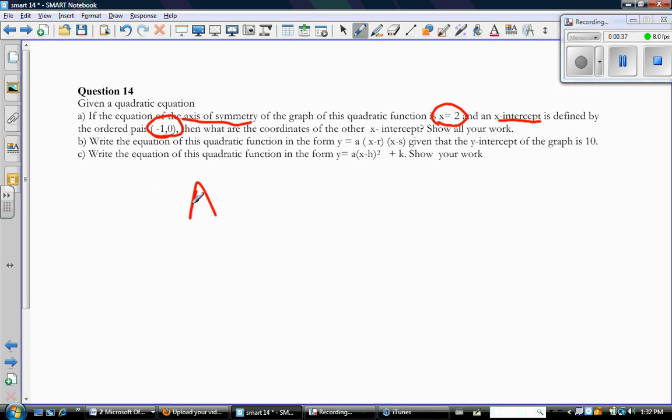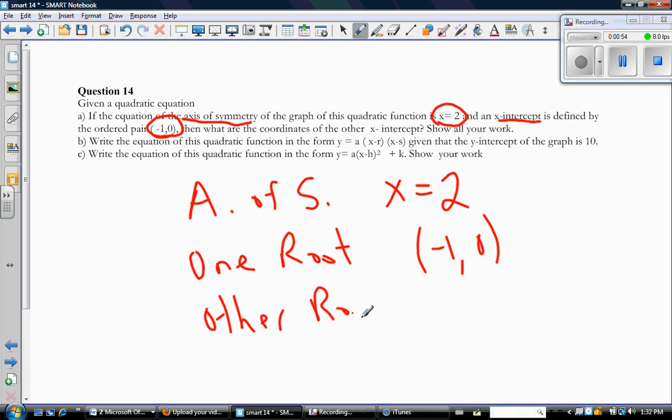Okay, so let's summarize what we know. We know that the axis of symmetry is the line x equals 2. We have one root, or x-intercept, at (-1, 0), and therefore the other root is the thing we need to find.